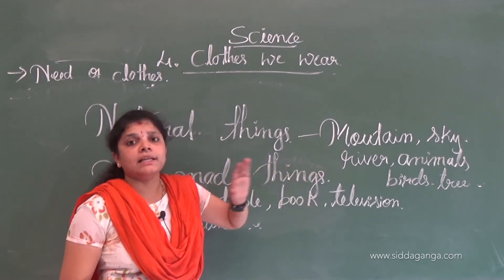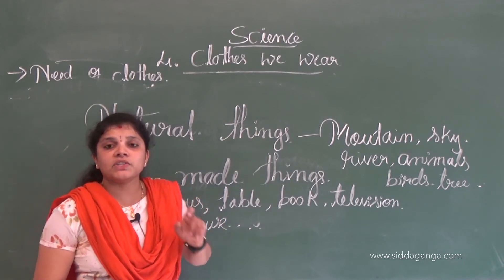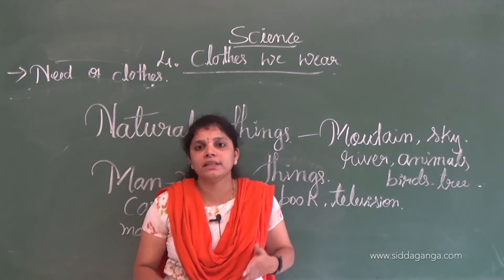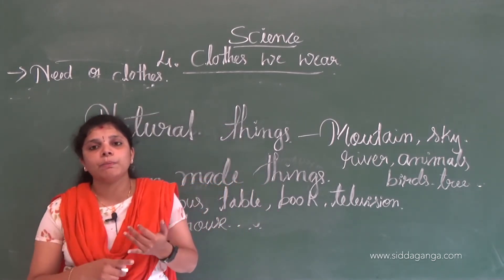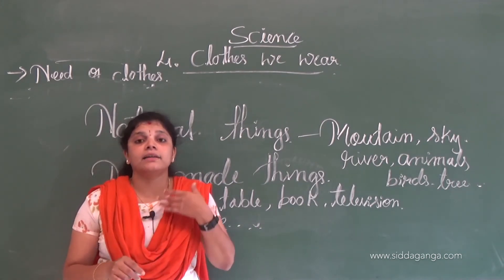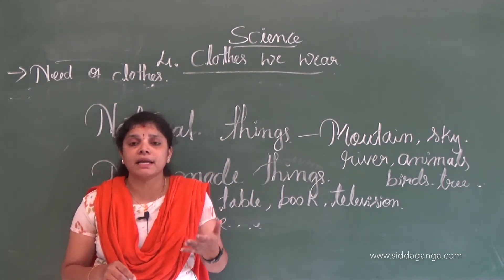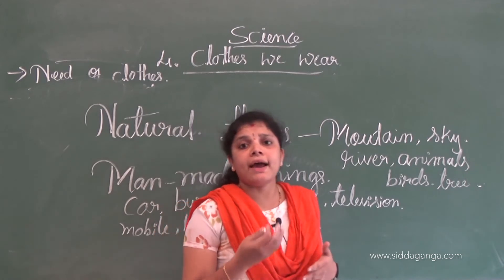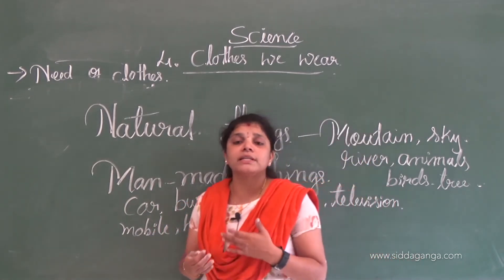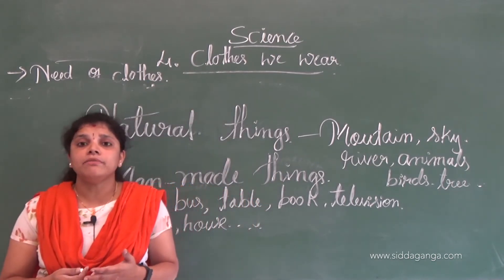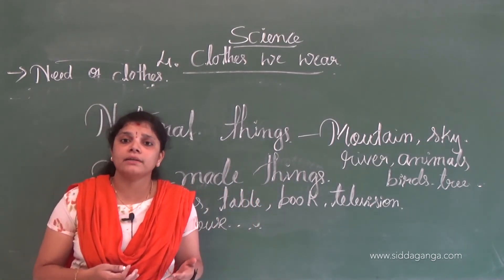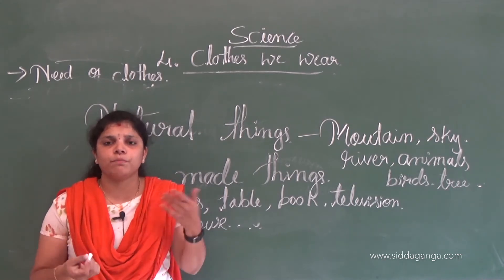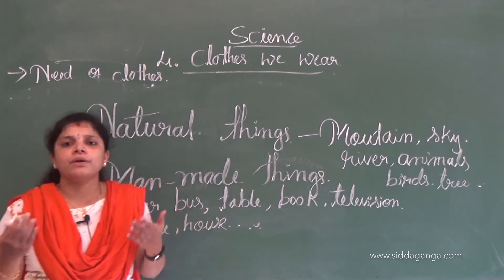Living things are things which have life. Examples of living things: humans, animals, birds, trees, and plants. Non-living things are things which do not have life. Examples of non-living things: mountain, river, ocean, TV, mobile, chalk, board, and book. Almost all man-made things are non-living things.